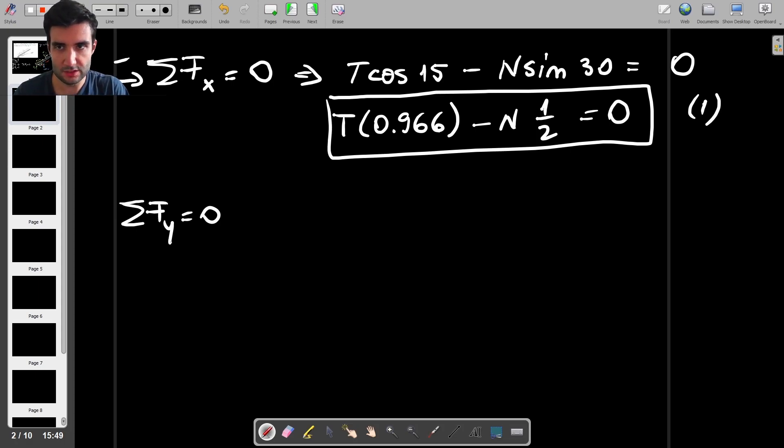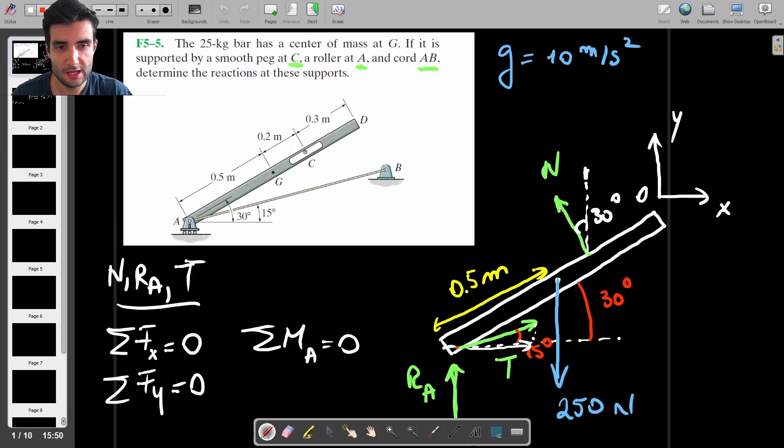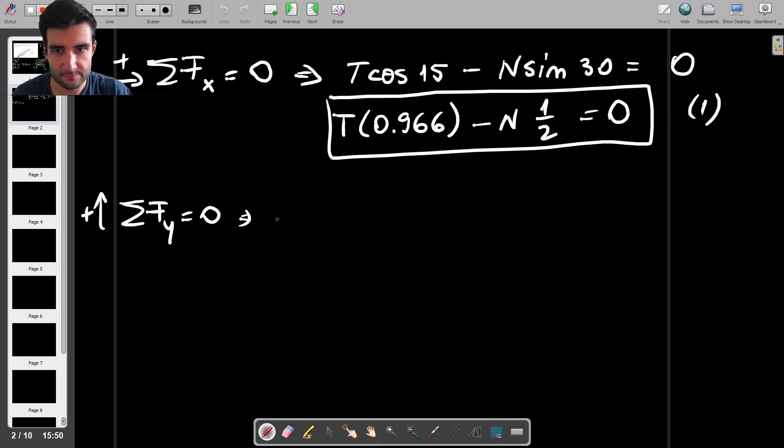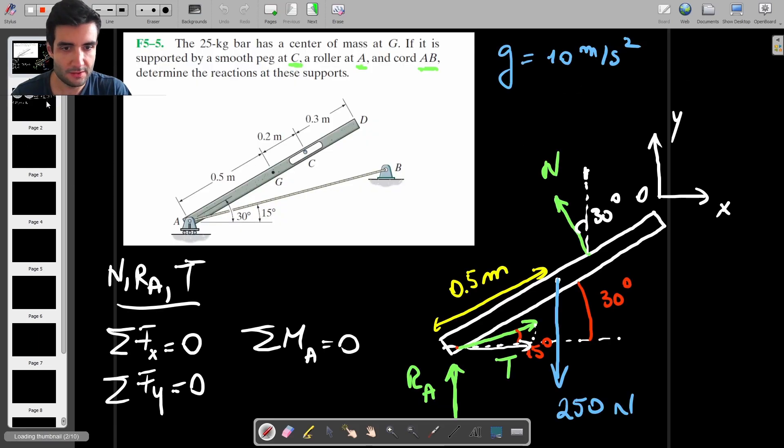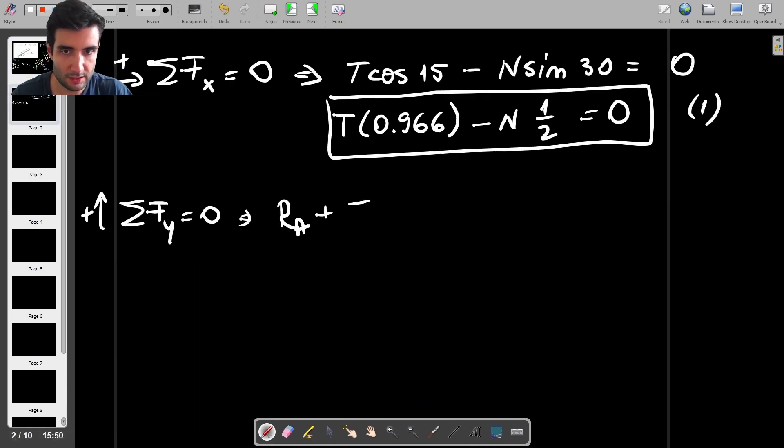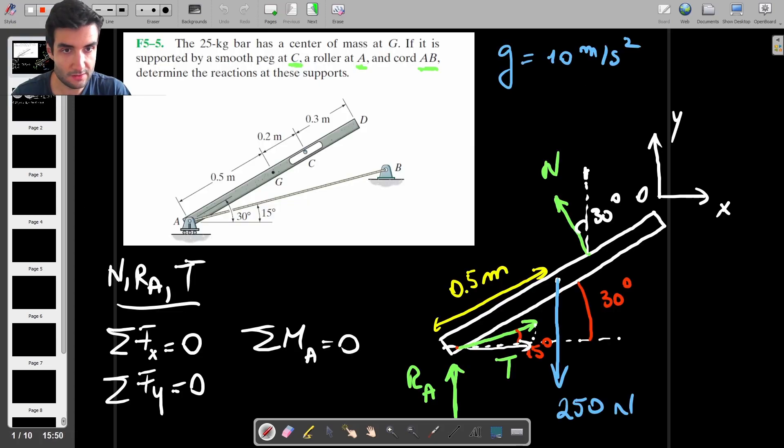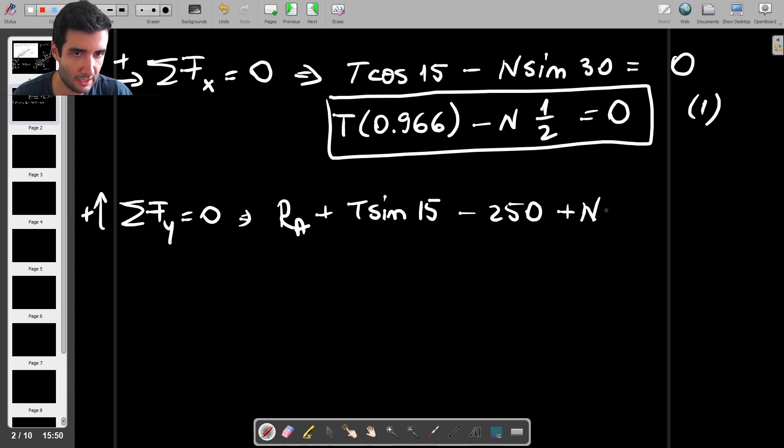The second equation says that the sum of force in the y direction is equal to zero. All four forces have a vertical component, so we have RA on one hand by itself, then we have the tension which has plus T sine of 15 degrees, then we have minus 250 which is the weight, and then we have N cosine of 30 which is the normal force, so that's plus N cosine of 30, and that is equal to zero.